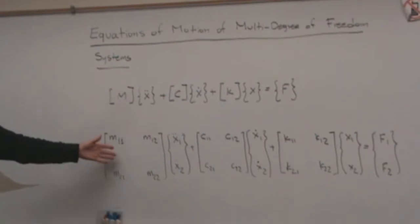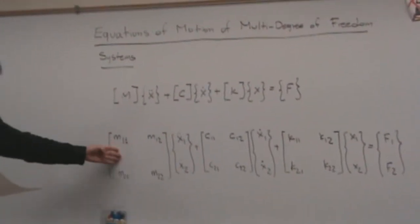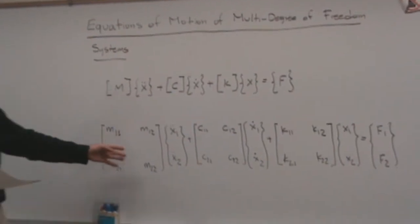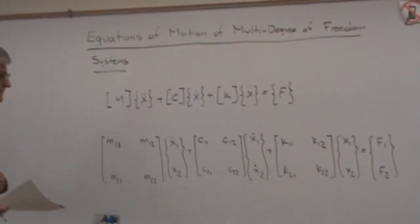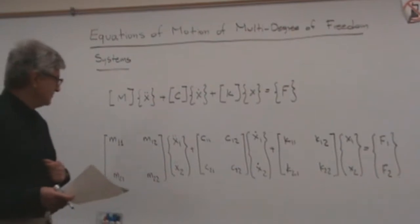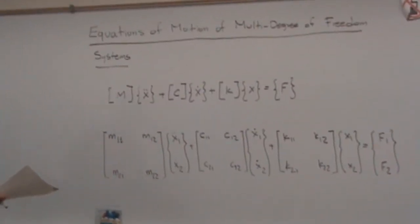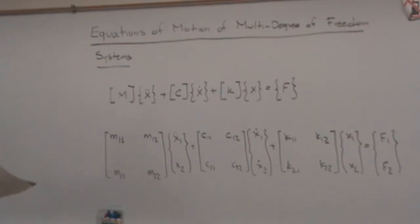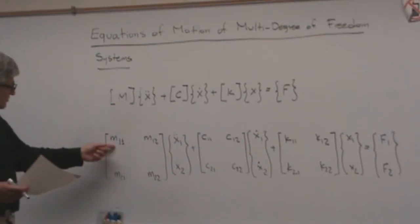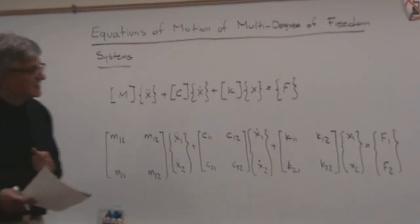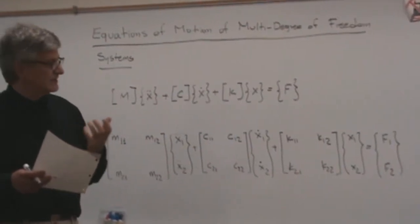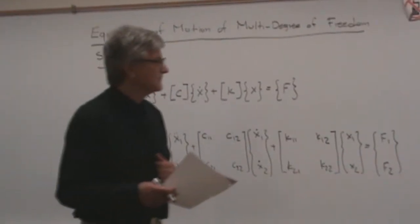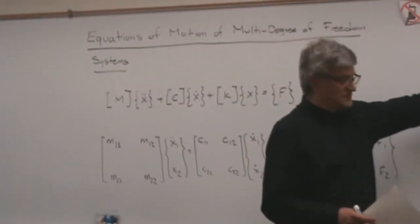In the case of a two-degree-of-freedom system, you have to determine four elements for the mass matrix, four elements for the damping, and four elements for the stiffness matrix. One way to determine these elements is to use what we call the unit displacement method, where we find the force needed to produce a specific displacement, acceleration, or velocity.